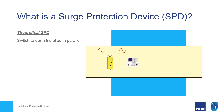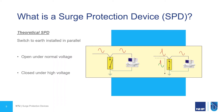So let's take a look at the operation of an SPD. In the ideal world, an SPD would simply be a switch to earth that is installed in parallel with the sensitive load. Under normal conditions, that switch would be open, so the mains voltage would be seen by our equipment. Then under surge events, when the SPD sees a high voltage, it closes that switch and conducts that spike in energy down to earth, and all our sensitive equipment sees is the mains voltage.